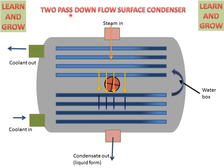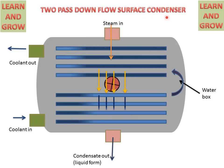So this is called 2 pass downflow surface condenser. 2 pass means tube sections are there. Downflow means steam will flow from top to bottom and surface condenser means water and steam will not mix with each other.